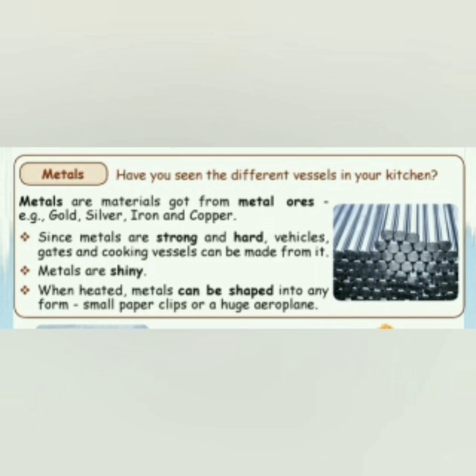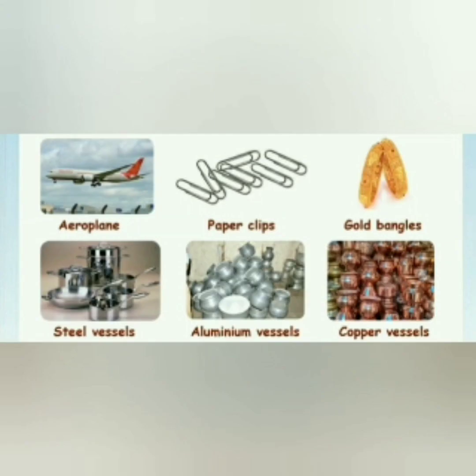What happens when we heat a metal? The metal can be shaped into different forms — from a small paper clip to a huge aeroplane. By heating it, we can change its shape as needed. Few examples of things made from metals are aeroplanes, paper clips, gold bangles, steel vessels, aluminium vessels, and copper vessels.